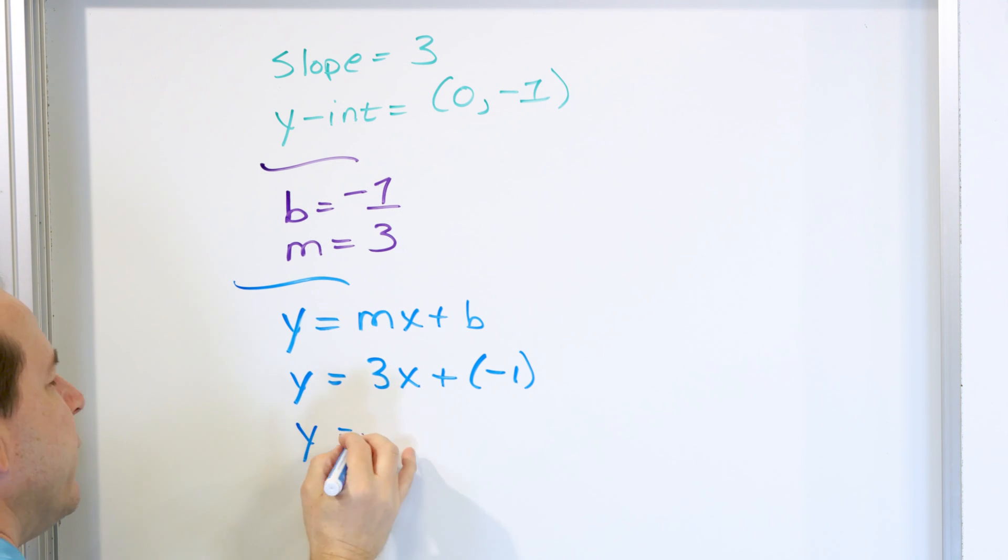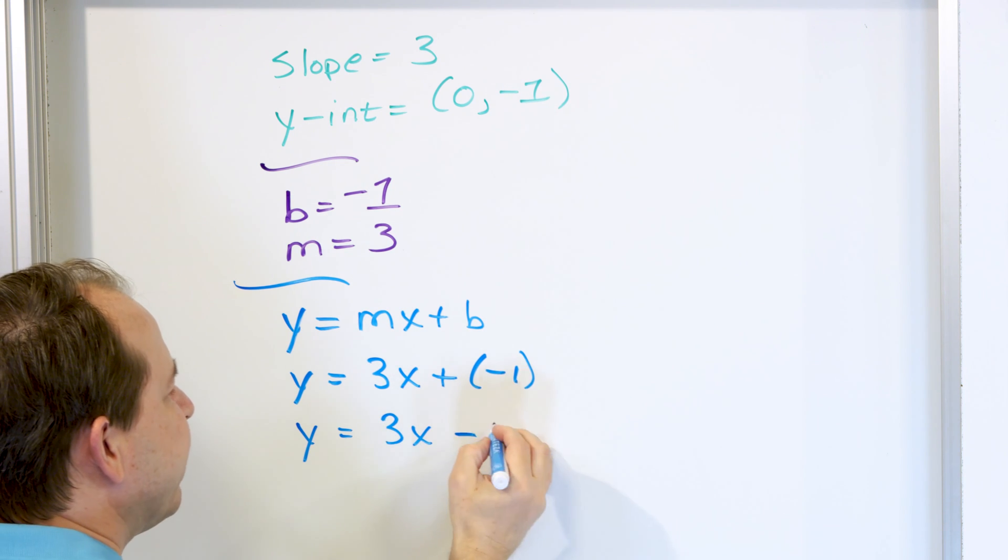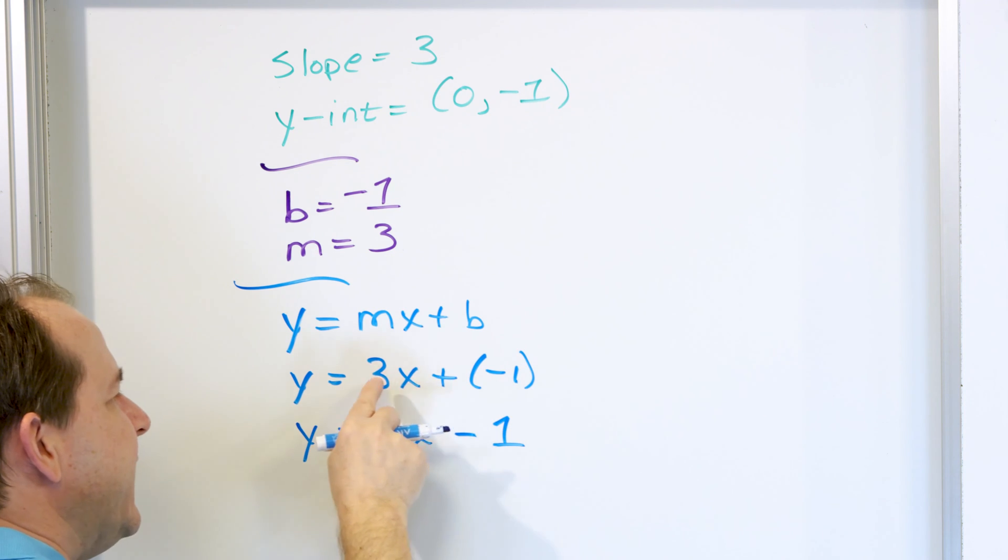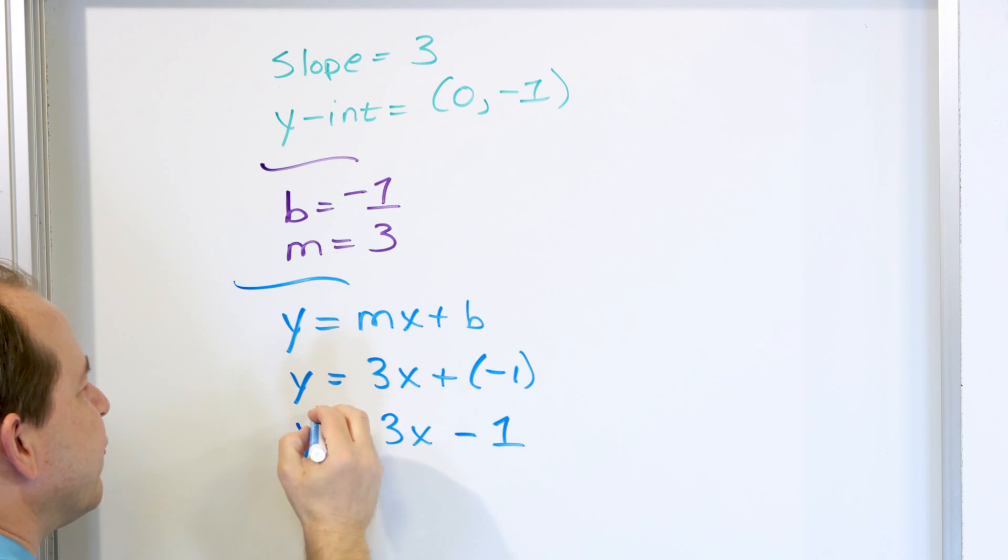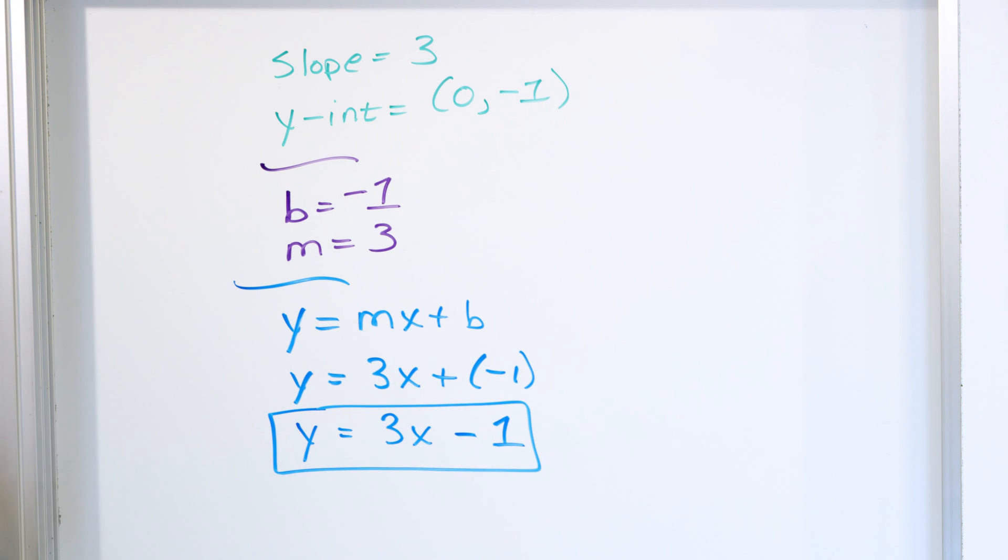mx plus b, where b was a negative number. But remember back from what we learned before, that anytime you have plus a minus sign, it's basically just subtraction. So you could write this as the equation of a line, mx plus b, that's correct. But really, when we have a plus minus, we always write it as subtraction. And this is the actual equation of this line.